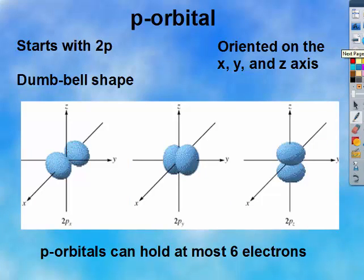P orbitals are dumbbell in shape, and they're oriented around the X, Y, and Z axis. And P orbitals can hold six electrons because there's three orbitals on the X, Y, and Z axis.